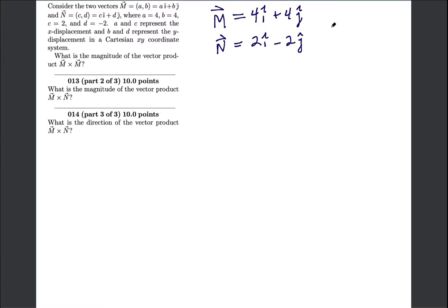Okay, so a couple of reminders: i crossed with i is 0, j crossed with j is 0. You can't have any component of a vector crossed with itself being anything other than 0. So if you cross two unit vectors, you're going to get a 0.